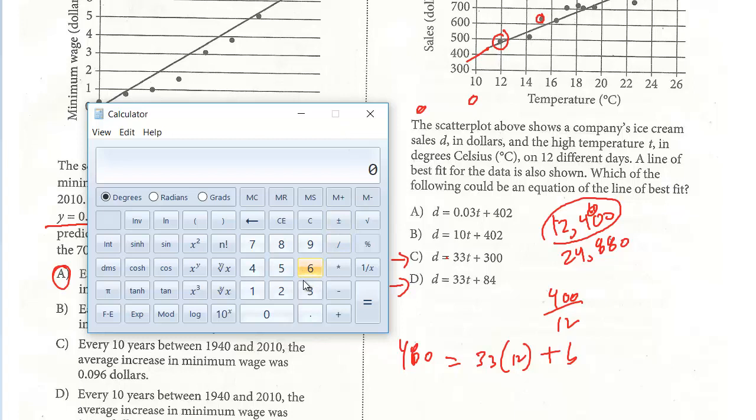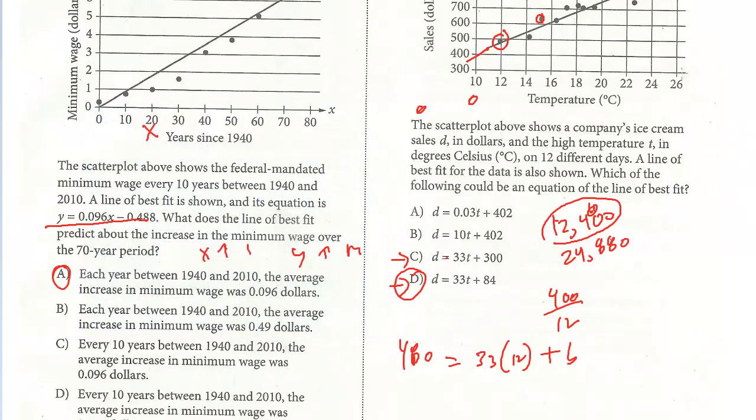So 33 and a third times 12 - I'm going to subtract this from both sides, which gives us our b. It's 84. And so the answer here is D.